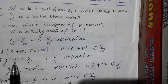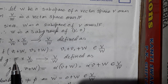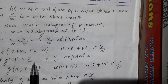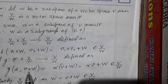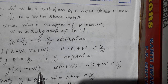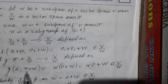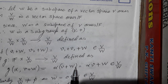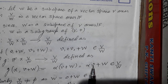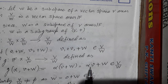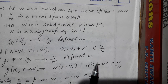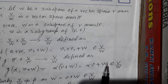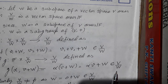We also define the scalar multiplication. We have F × V/W → V/W. Any element here is of the form V + W. We define α·(V + W) as αV + W. Since α is from the field and V is from V, and V is closed under scalar multiplication, αV belongs to V, so the whole thing belongs to V/W.